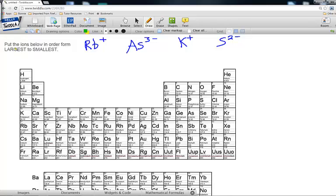Here they are asking us to put the ions below in order from largest to smallest. The ions we have to work with are Rb+, As3-, K+, and S2-.